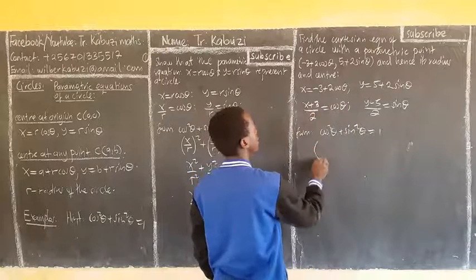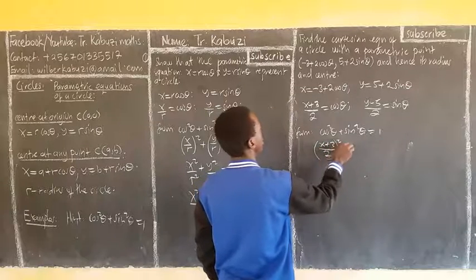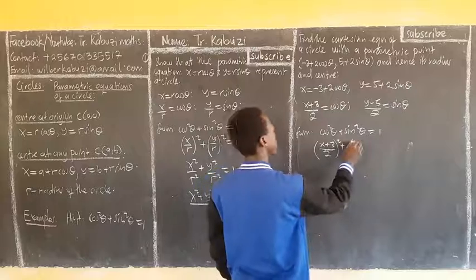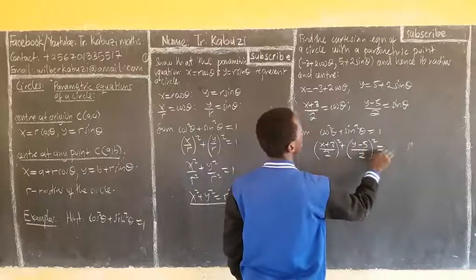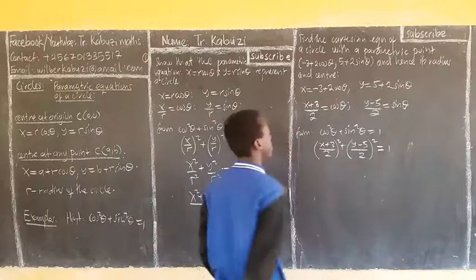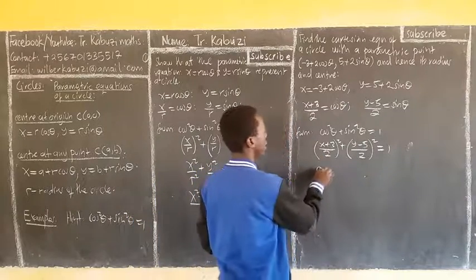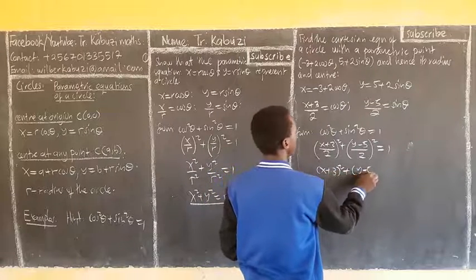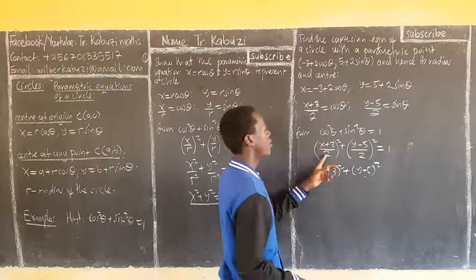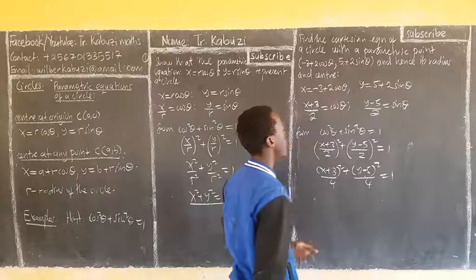I have now x plus 3 over 2 squared plus y minus 5 over 2 squared equal to 1. From there you see that we have x plus 3 squared over 4 plus y minus 5 squared over 4 equal to 1.